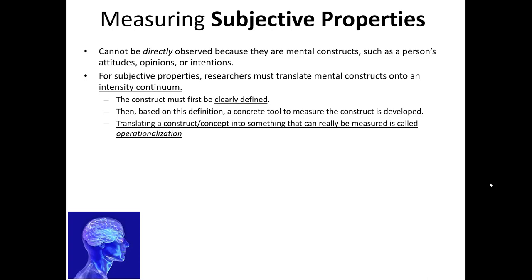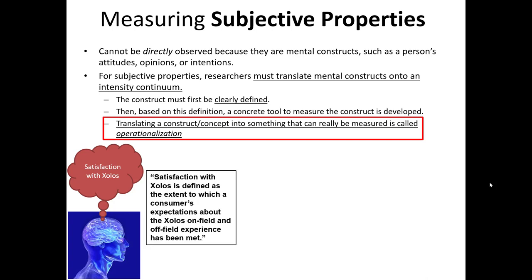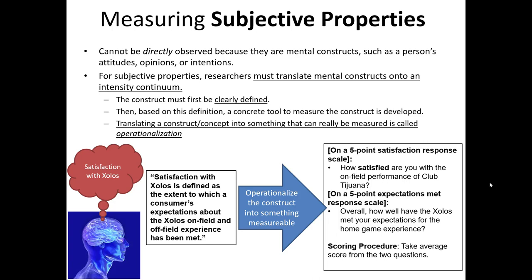This process of translating a clearly defined construct into a concrete measurement tool is called operationalization — that's a big word you can use to impress people at the next dinner party. We know that we can't directly extract someone's level of satisfaction, so how can we estimate what their level of satisfaction might really be? First, following the steps above, we define it: satisfaction with the Solos is defined as the extent to which a consumer's expectations about the Solos on-field and off-field experience has been met.